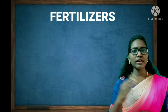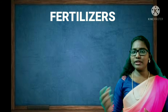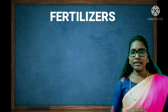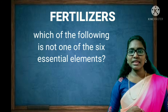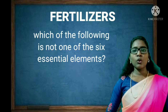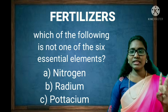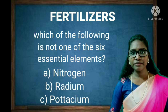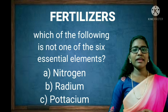Now let's move to the second question for team boys. Which of the following is not one of the six essential elements that plants need? Option A: Nitrogen. Option B: Radium. Option C: Potassium. The answer is B, Radium.